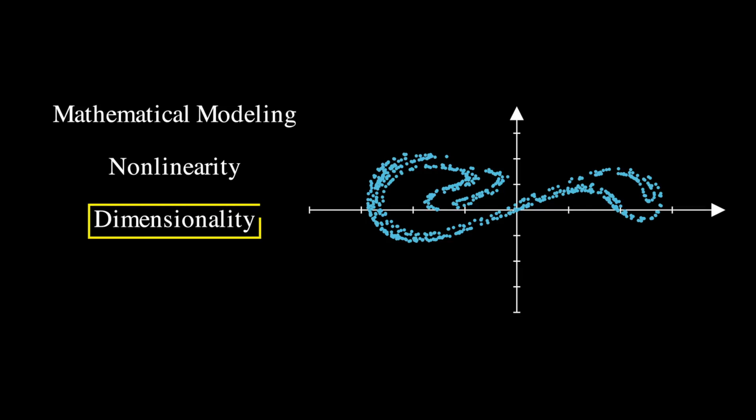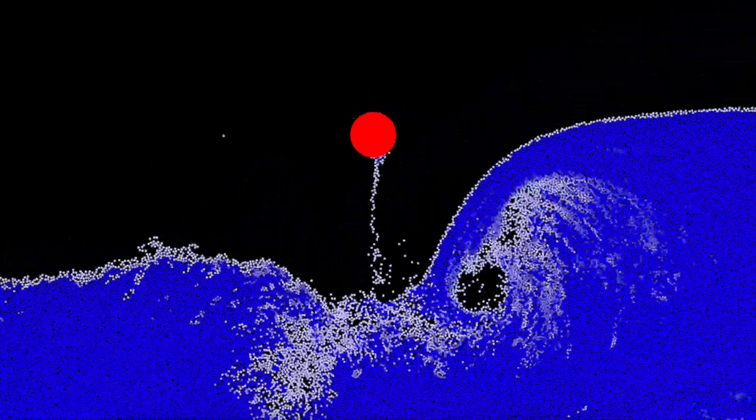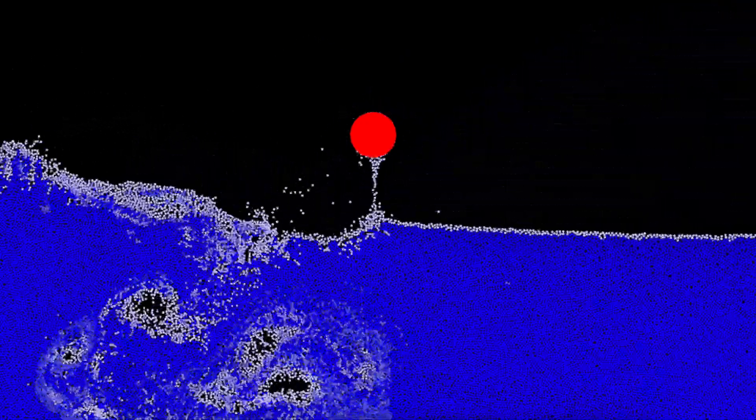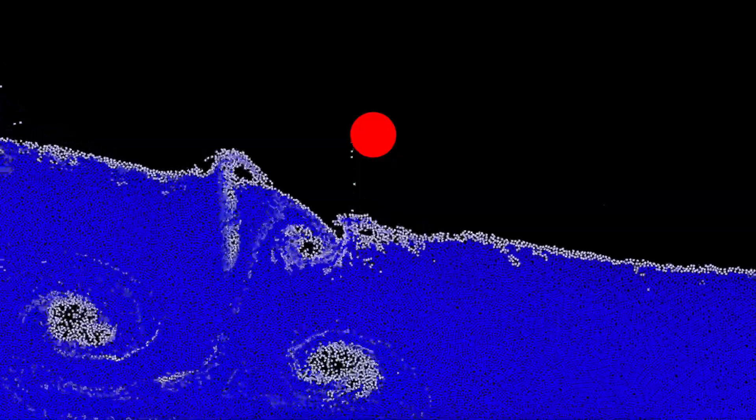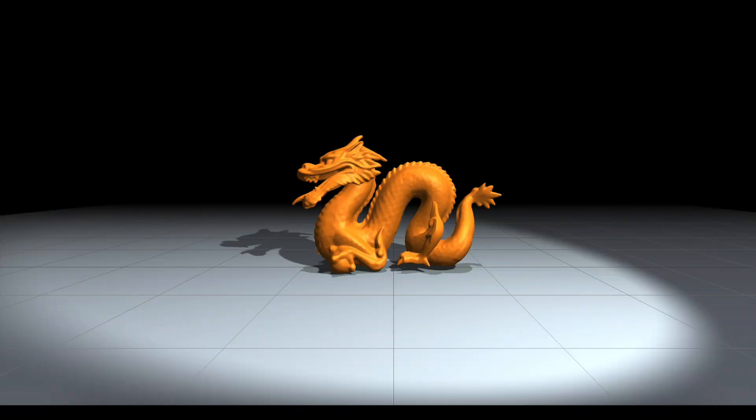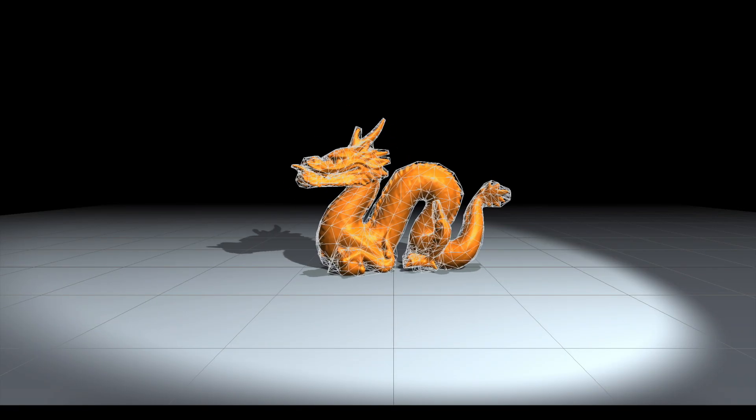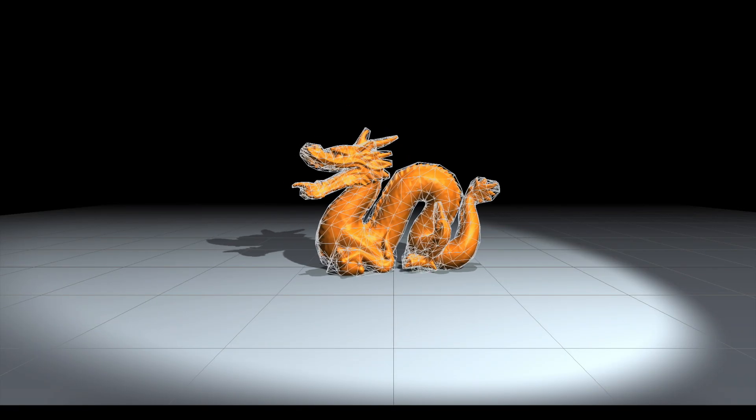This brings us to the third challenge in applied dynamical systems, dimensionality. The challenges that dimensionality brings to nonlinear systems are multi-fold. First, many physical systems we measure can have numerous interacting states, making full-order models that account for every detail hard to simulate or interpret. Reduced-order models aim to simplify this by using fewer states while capturing the key behavior of a system. However, creating these simplified models, especially from experimental data, remains a significant challenge.